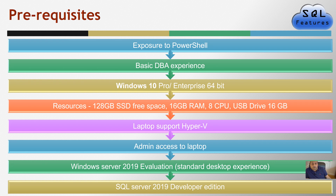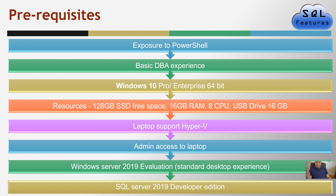Let's talk about some of the prerequisites you need to perform this tutorial. First, you should have exposure to PowerShell — a basic exposure will do — plus basic DBA experience, or even if you are in IT and looking to learn Always On. From a hardware point of view, you're going to need Windows 10 Pro or Enterprise 64-bit edition, because that's what allows you to create a virtual hard disk and configure a Hyper-V lab. You'll need 128 GB of SSD space, 16 GB of RAM, 8 CPUs, and a 16 GB USB drive.